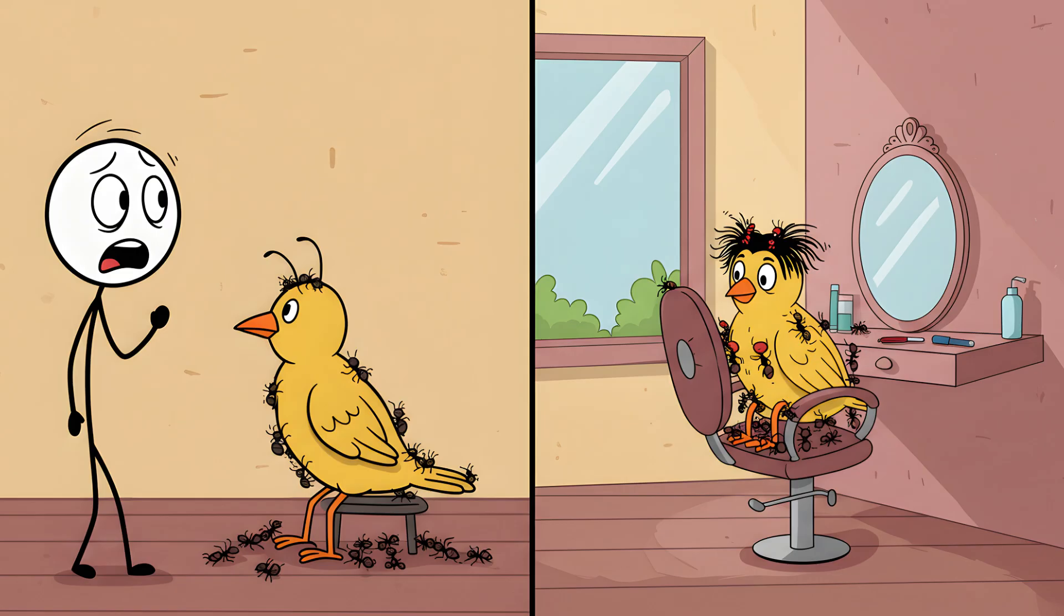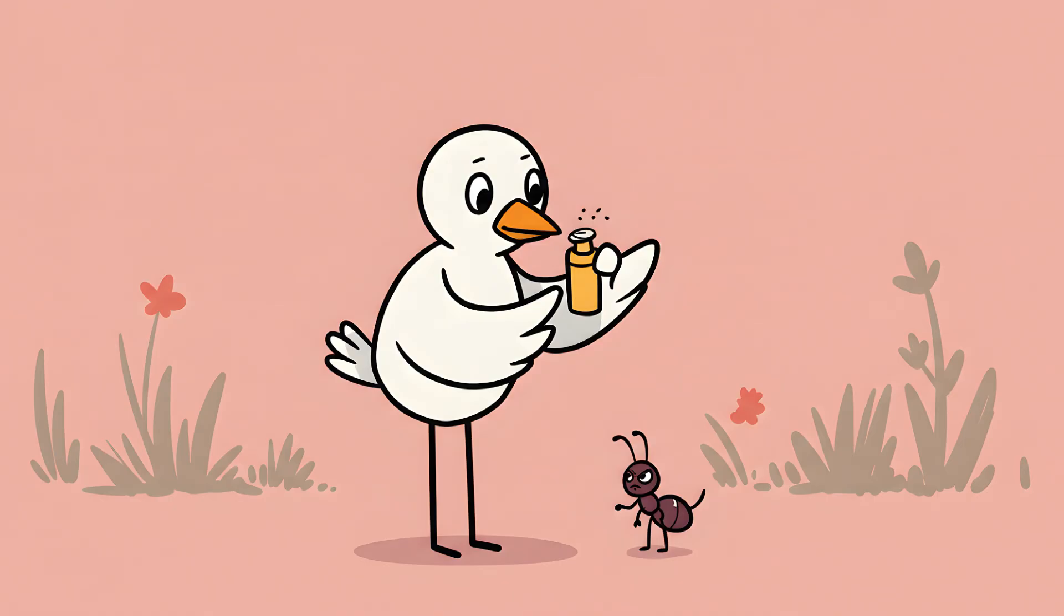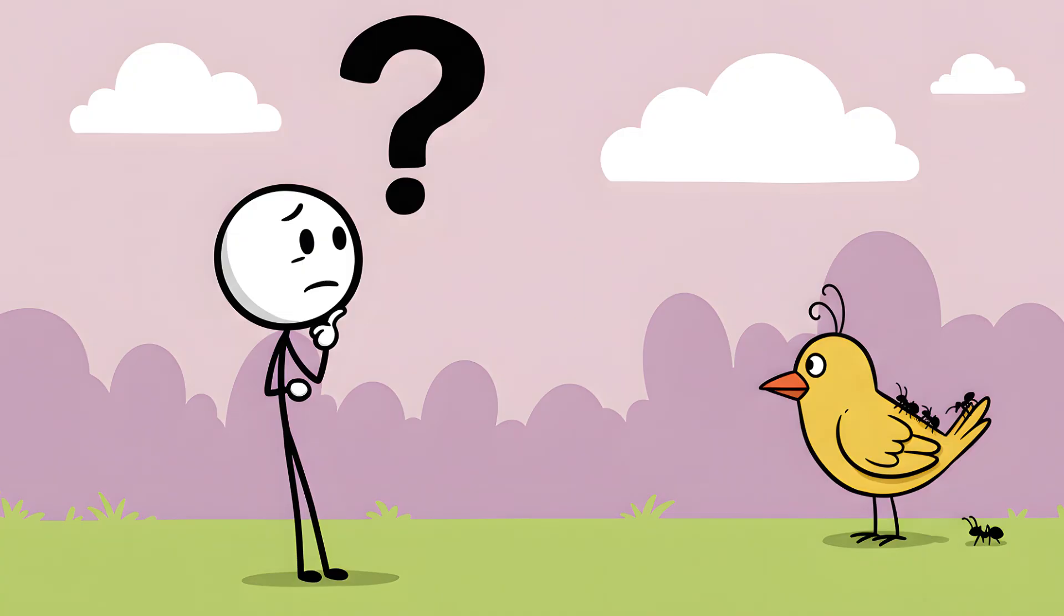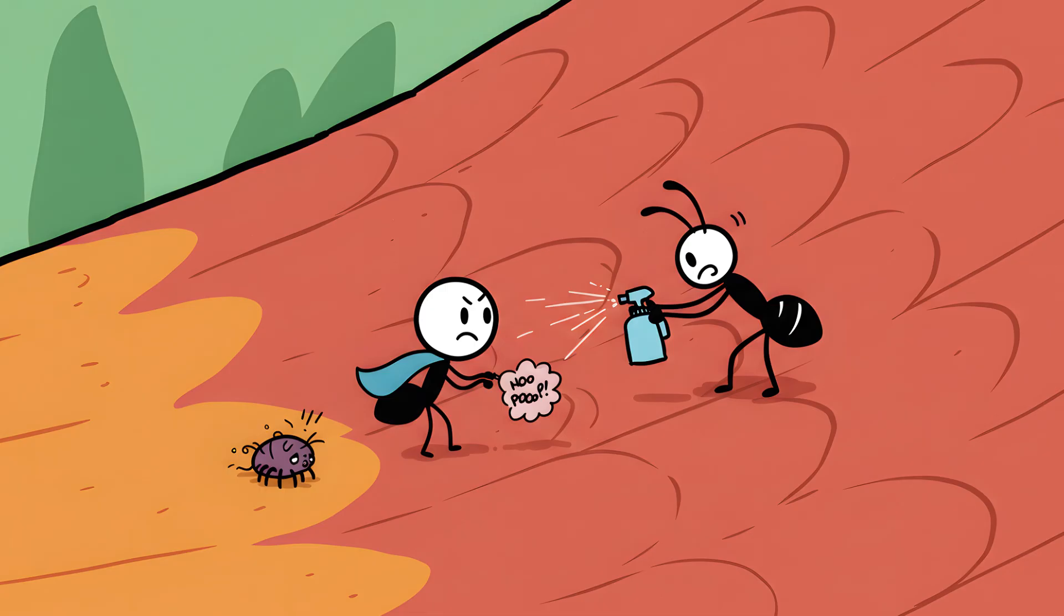To you, this sounds like a very specific form of torture. To the bird, this is a day at the salon. Some birds don't even bother with the anthill. They'll just pick up individual ants with their beaks and rub them, one by one, all over their feathers, like they're applying a very angry lotion. So, the billion-dollar question is, why? Why are they willingly subjecting themselves to this?